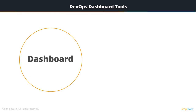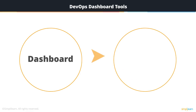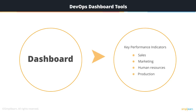Dashboards often provide an at-a-glance view of various key performance indicators, also called KPIs, relevant for a particular objective or business process like sales, marketing, human resources, or production. In real-world terms, a dashboard is another name for a progress report or a report.